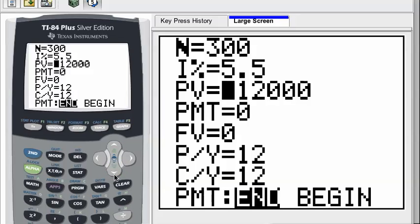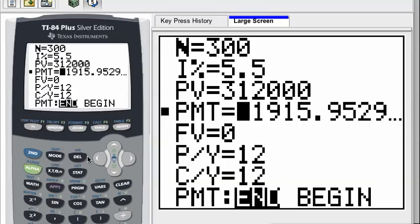Let's take it down here to PMT. Press the alpha key followed by the enter key. And there are your monthly payments. Negative, right? This is money leaving you. It's leaving you to pay back the loan that you got, $1,915.95.